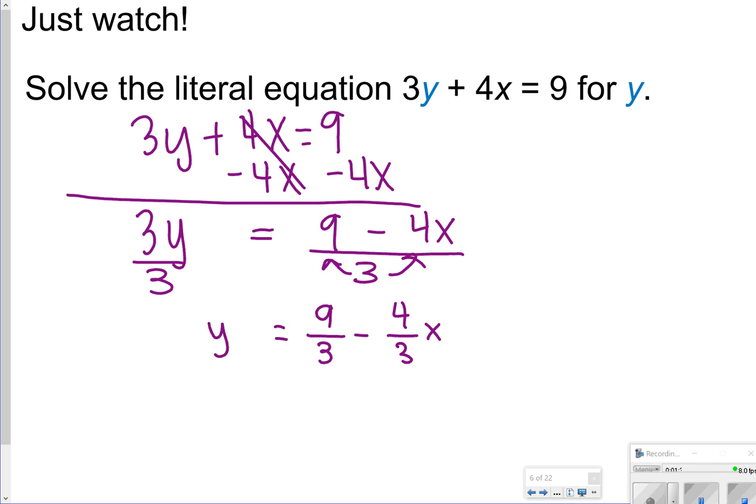So I still have y is equal itself, but I can simplify some more things. So I'll have y equals 9 divided by 3 is 3, and then I can just keep 4 thirds like that as my answer, or you could say y is equal to 3 minus 1 and 1 third x. Both of those are going to be the same thing when you solve for y.